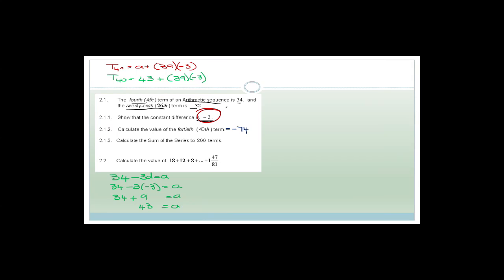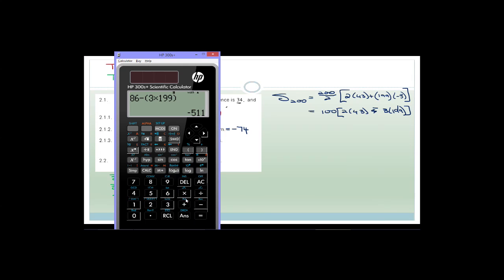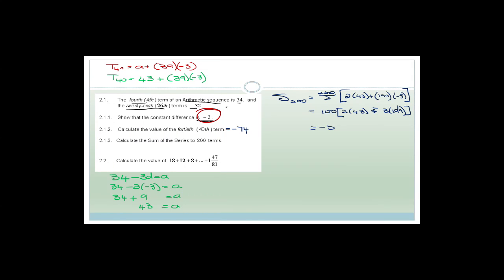Calculate the sum of the first 200 terms. S200 = 200/2 × (2×43 + 199×(−3)) = 100 × (86 − 597) = 100 × (−511) = −51,100.